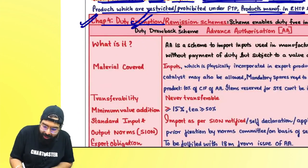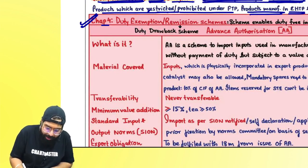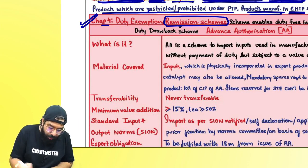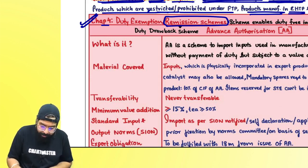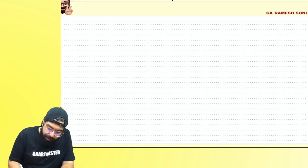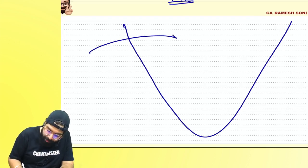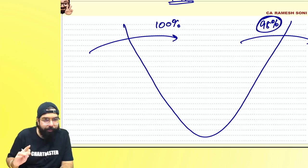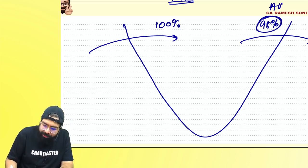Chapter 4 covers Duty Exemption or Remission Scheme. This is similar to duty drawback under customs — if you import into India and pay 100% of the duty, and then export, you get duty drawback of 98% or as per all industry rate.